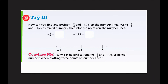Looking at our next one: how can you find and position negative five-fourths and negative one and seventy-five hundredths on the number line? The problem tells us to write them as mixed numbers and plot the points. Let's start with the fraction. If I have negative five-fourths, I need to pull out as many fourths as I can — that's 1 whole, which is four-fourths. What's left is one-fourth. So I get negative one and one-fourth.